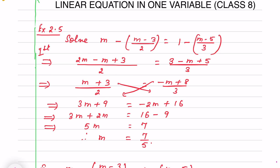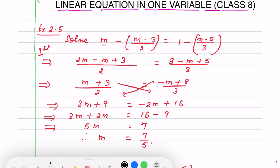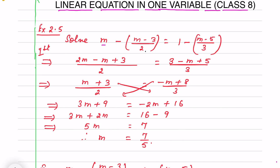Hello children, once again I am here with Class 8, Chapter: Linear Equations in One Variable, and how to solve for x or m — for any variable — how to evaluate the unknown. The question is Exercise 2.5, Question 6: m minus (m minus 3) by 2 equals to 1 minus (m minus 5) by 3.